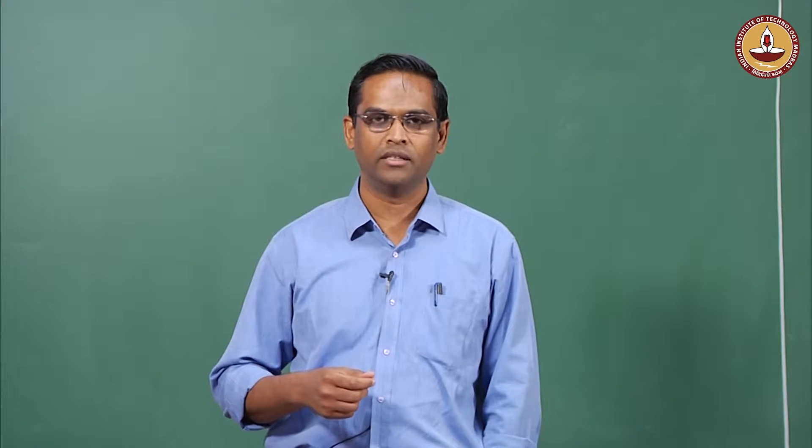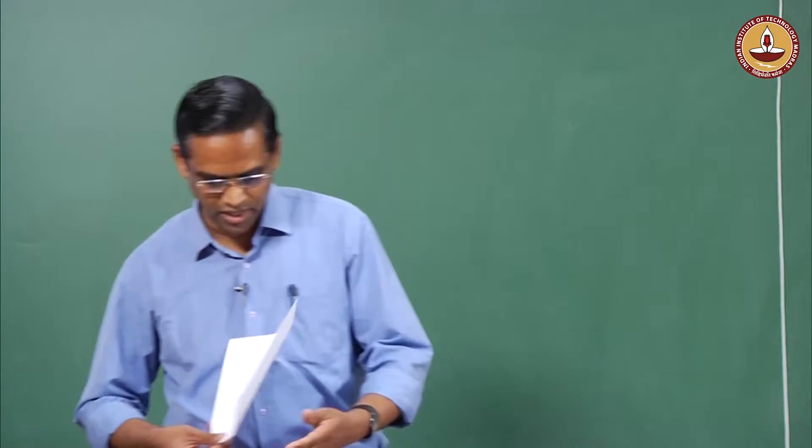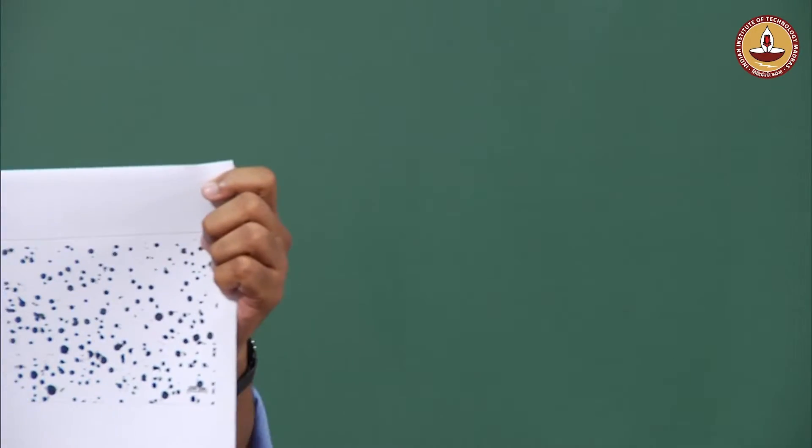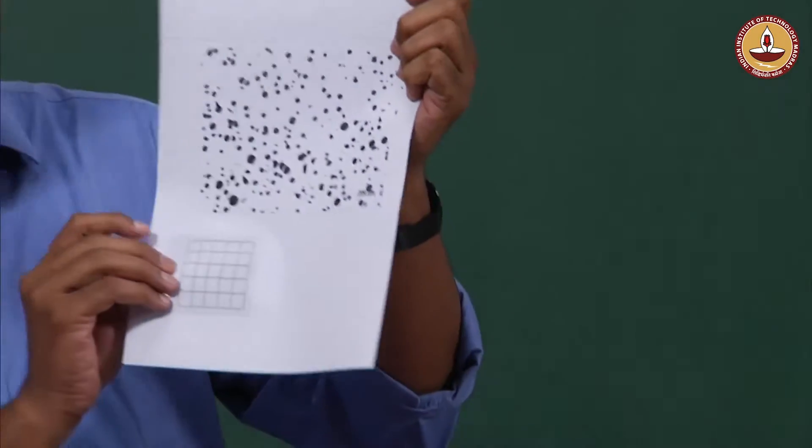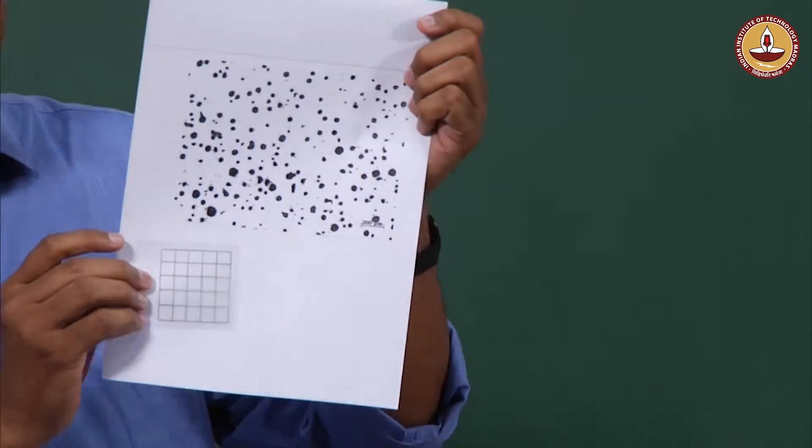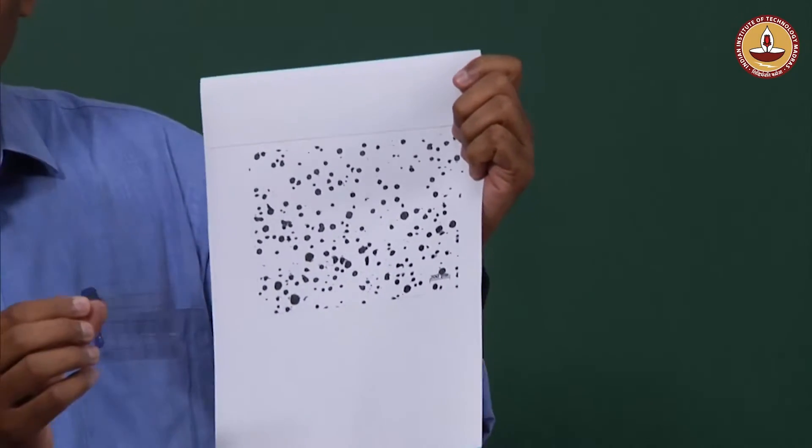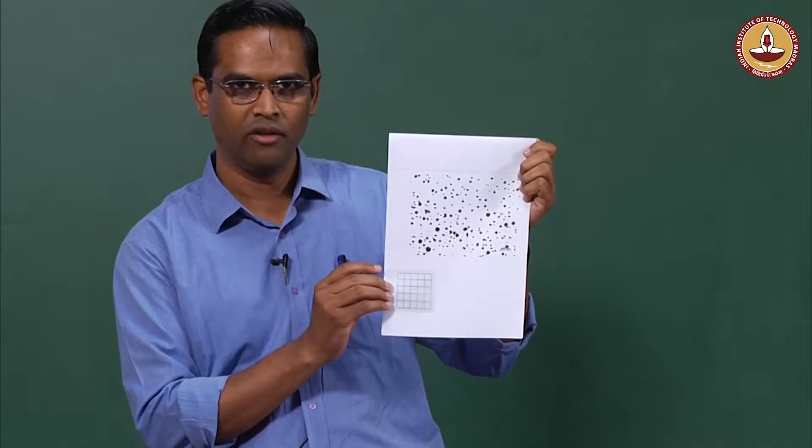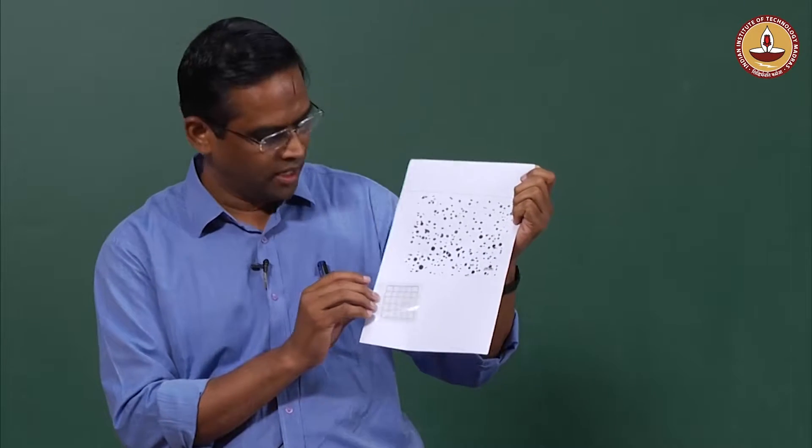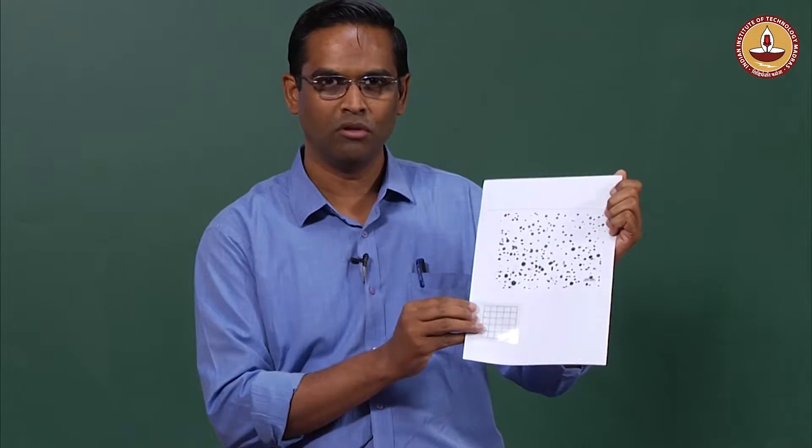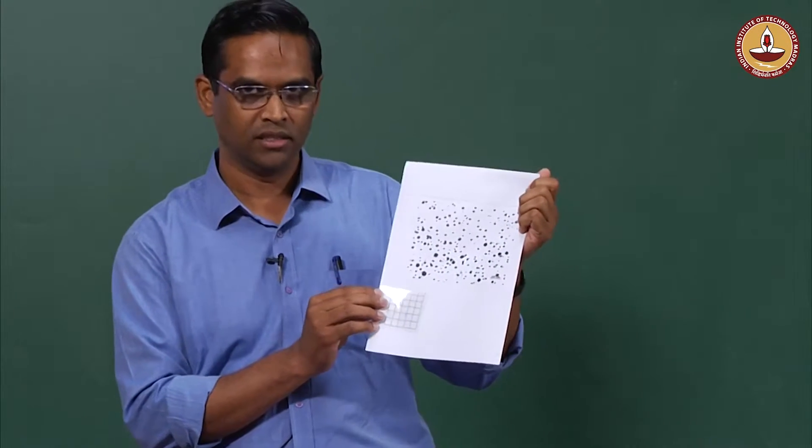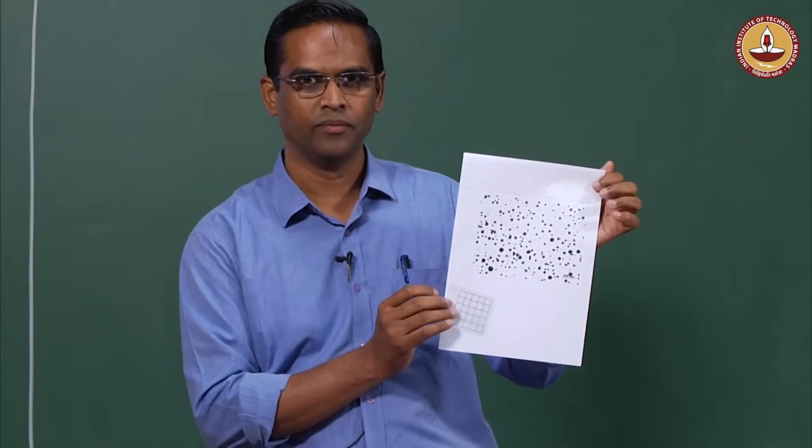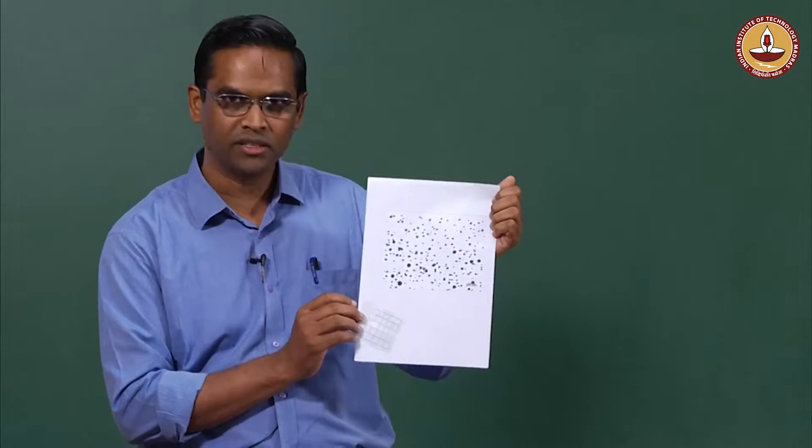What I am going to do is take an actual microstructure which is of this nature. This is a microstructure of cast iron, and we are going to use a probe of this nature, which is a grid. Now I will demonstrate using this probe how we are going to calculate the point fraction PP, and then the PL which can be related to the average diameter of the particles. Let us do these measurements.